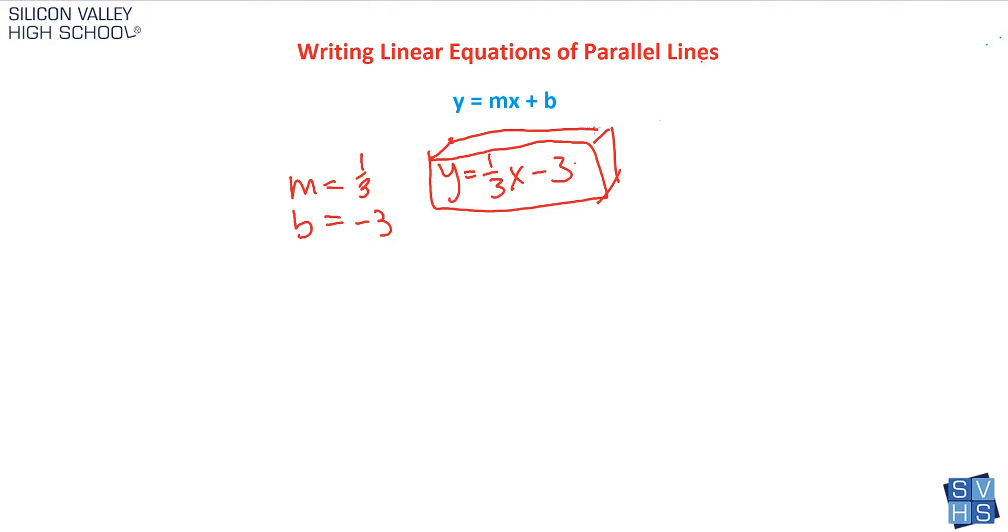Problem is, they don't usually give you the slope and the y-intercept. They give you clues, and you have to solve backwards to find them. When you're dealing with two lines that are parallel, the hint is that parallel lines have the same slope, the same m.